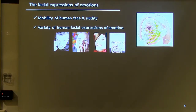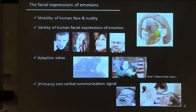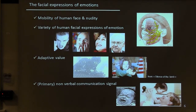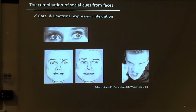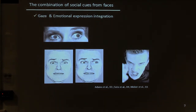Facial expressions of emotions are also greatly evolved in humans. We have a very mobile, largely nude face, and the richness of human facial expression may be unique to humans. Emotions have a crucial adaptive value shared with other animals, but something slightly specific is that emotional expression has also become primarily a communicative signal among humans. The integration of gaze and emotional expression is crucial to our ability to interpret the behavior of others — not only because the eyes are the most expressive part of the face, but also because the meaning of an emotion can be changed by the gaze direction of the person we see.